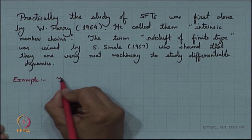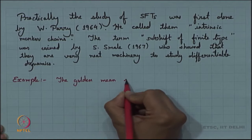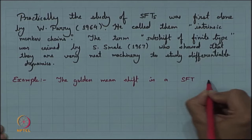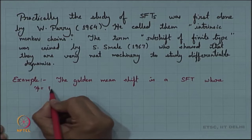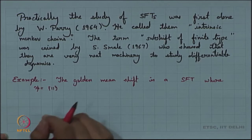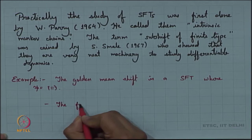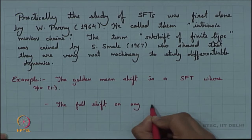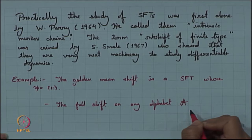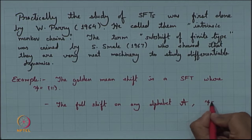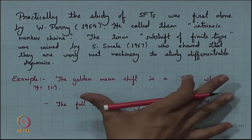The golden mean shift is a subshift of finite type where the forbidden words are just the block 1 1. We can describe the forbidden word by just the block 1 1, so this is a subshift of finite type. The other example is the full shift on any alphabet A — in this case the forbidden words is an empty set, so these are also trivially subshifts of finite type.